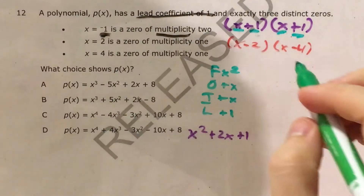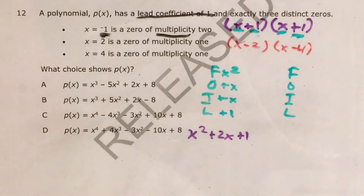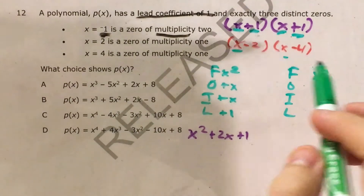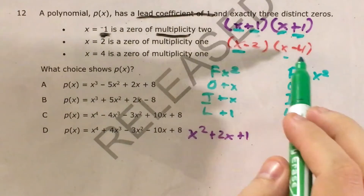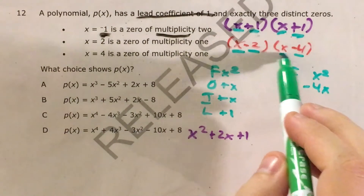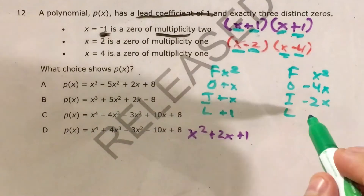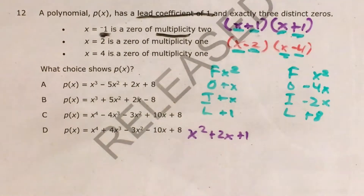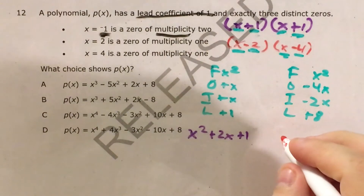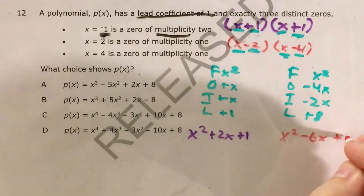Now I need to do the same thing for the other two binomials. My first terms, x times x, gives me x squared. My outside terms, x times minus 4, gives me minus 4x. My inside terms, minus 2 and x, gives me minus 2x. And for my last terms, minus 2 and minus 4 give me plus 8. So after combining like terms, the other trinomial is x squared minus 6x plus 8.